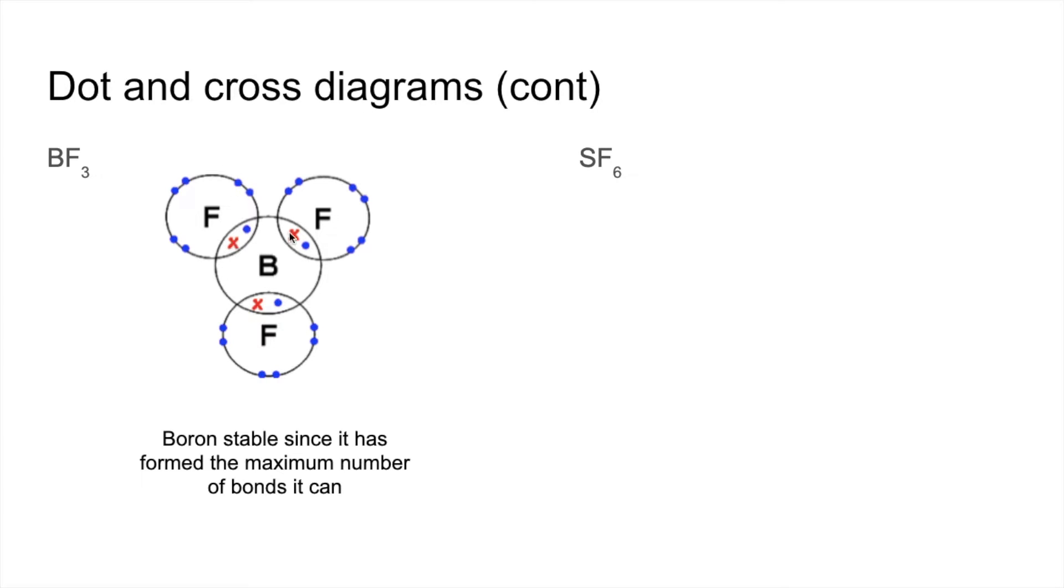Boron, because it's only got these three outer electrons, is stable once it's formed three covalent bonds. Again, these are single covalent bonds, just one shared pair of electrons.